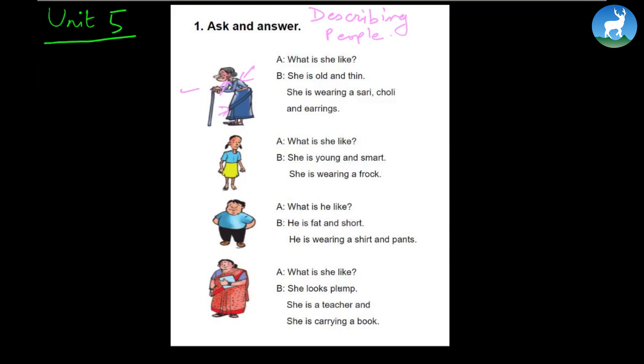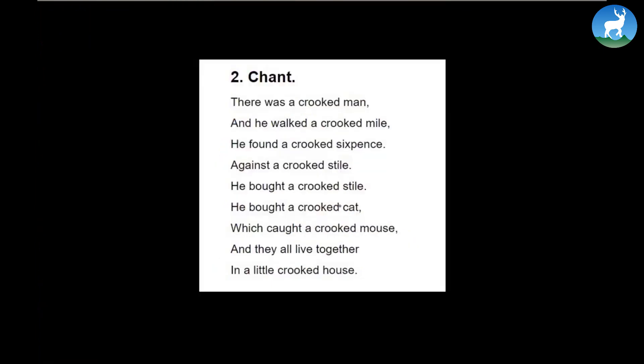So as we move further, chant this poem here. There was a crooked man and he walked a crooked mile. He found a crooked sixpence against a crooked style. He bought a crooked cat which caught a crooked mouse, and they all lived together in a little crooked house. So it defines a person who is crooked. It's a wonderful poem, a very humorous poem where everything that he comes across in life is crooked.